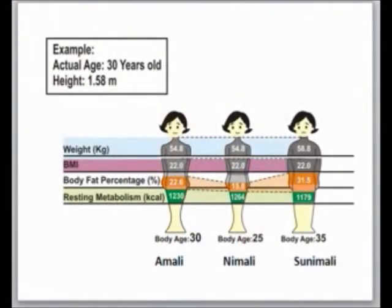You should build muscle mass rather than fat, because skeletal muscle is one of the most metabolically active tissues — the more muscles you have, the more energy the body must burn to keep them alive. If you want to improve your resting metabolism and burn more calories, you must improve your muscle mass. Here you can see three different examples — three ladies named Amali, Himali, and Sun Himalaya — who have the same height, same age, same weight, and therefore the same BMI of 22, even though they look a little different.